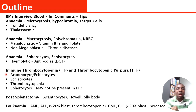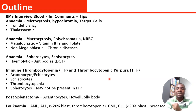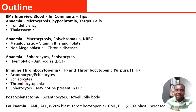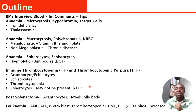Another thing you are going to see is ITP — immune thrombocytopenia — or TTP, thrombocytopenic purpura. Most times this is associated with seeing acanthocytes, echinocytes, schistocytes, thrombocytopenia, and spherocytes. Note that with ITP, spherocytes may not necessarily be present.